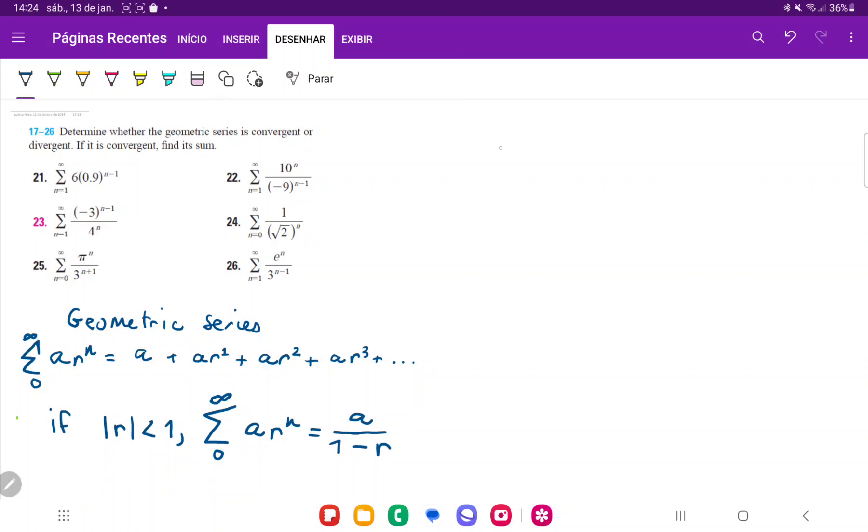So our sum here, our series, begins at 1 and goes to infinity of 6 times 0.9 to the power of n minus 1. We can see here that our ratio of the thing that is being raised to some power is 0.9.